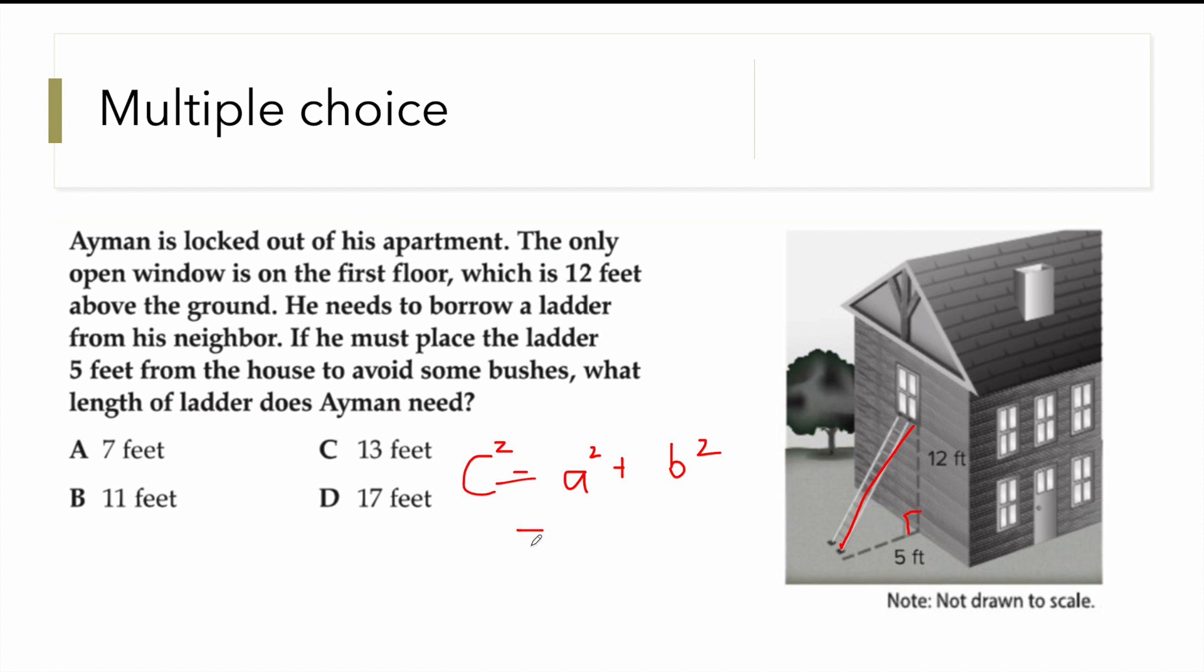So our C is X squared, it's what we're looking for. 5 squared plus 12 squared. Let's get the sum. We can just do it in one step.